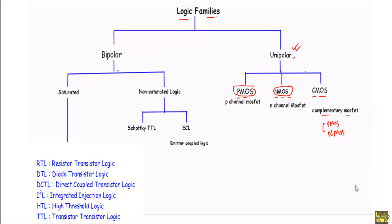Now let me show you the classification of bipolar logic families. A bipolar junction transistor has three different regions of operation: the saturation region, the active region, and the cutoff region. Based on the region of operation, bipolar logic families can be further classified into two types: saturated logic families and non-saturated logic families.